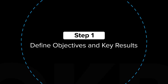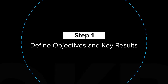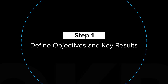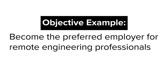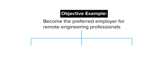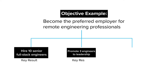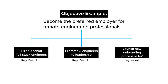Step 1: Define Objectives and Key Results. Objectives should go beyond business-as-usual targets. Each objective must have three to five key results, which measure the success of that objective. Key results should be measurable — you either achieve a key result or you don't.